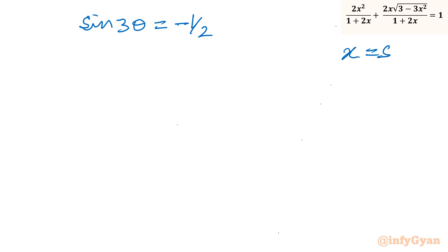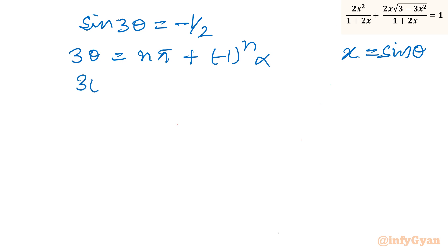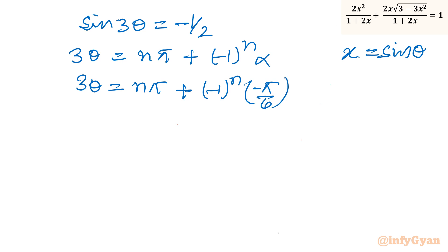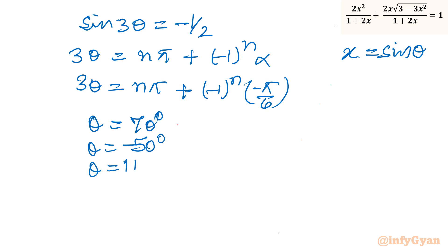The general solution for sin 3θ = −1/2 is 3θ = nπ + (−1)ⁿ · α, where α = −π/6. By putting n = 1, −1, 2, −2 and using the concept of co-terminal angles, θ comes out to be 70°, −50°, and 110°.